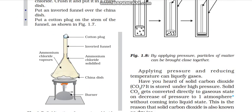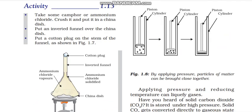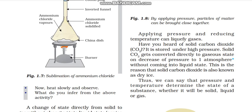There is one activity given here. Take some camphor or ammonium chloride, crush it and put it in a china dish. Put an inverted funnel over the china dish and a cotton plug on the stem of the funnel. Heat slowly and observe. The ammonium chloride converts into gaseous form, and since there is no way to escape, the vapors deposit as solidified ammonium chloride on the inner walls of the funnel.